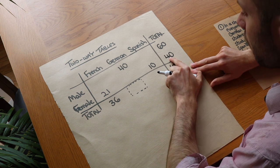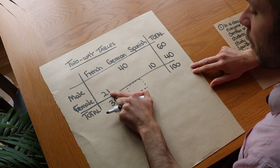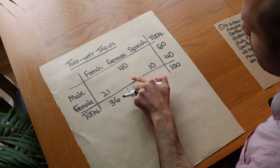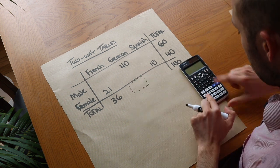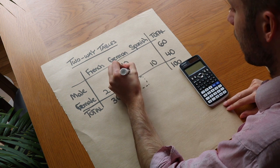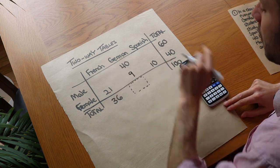Now we also know there's a total of 40 females and 21 study French and 10 study Spanish so to get the number of German females we just have to do 40 minus 10 minus 21 and that gives us 9 so these now add up to 40.